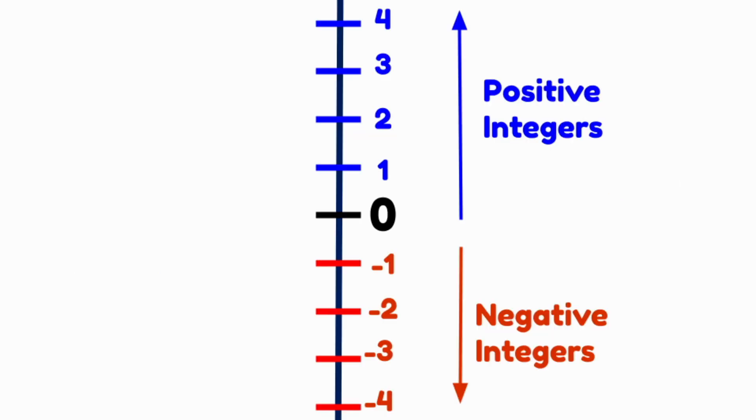On a vertical number line, our positive numbers are always found above the zero and our negative numbers are the opposite. They're found below the zero on a vertical number line.